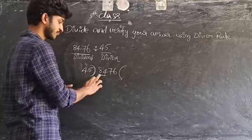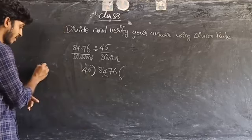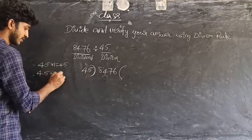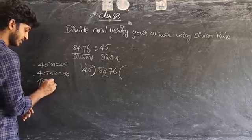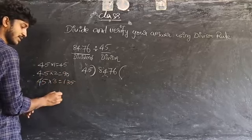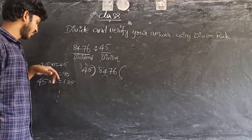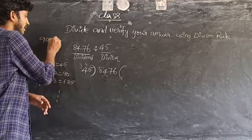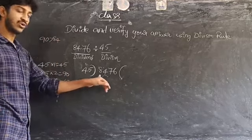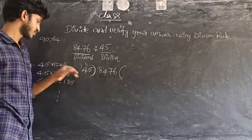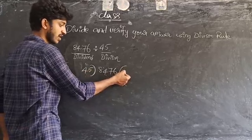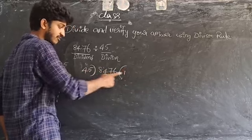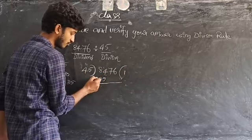First of all, we take the first two digits — 84. Now 45 into 2 is 90, and 90 is greater than 84, so we do not multiply by 2. We take 1 times 45: one times 45 is 45. We place 1 in the quotient and multiply 45 by 1.